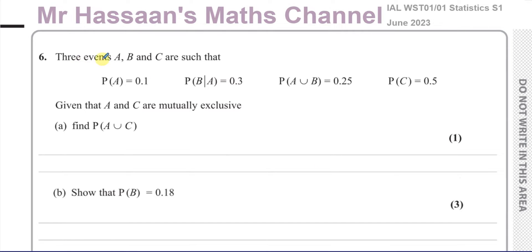It says the three events A, B and C are such that the probability of A is equal to 0.1, the probability of B given A is 0.3, the probability of A union B is 0.25, and the probability of C is 0.5.